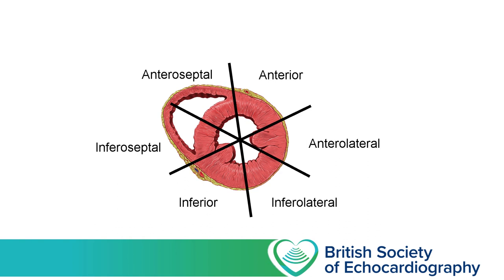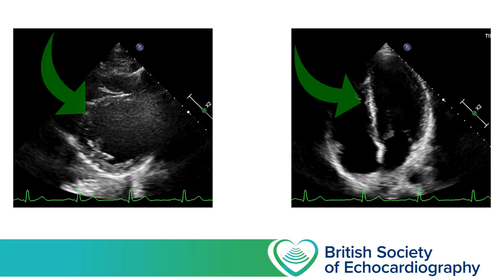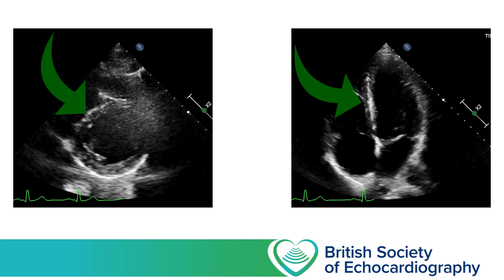At the base of the LV we use the same six divisions, while at the apex the septum and lateral walls are not divided, giving only four apical segments: septal, anterior, lateral, and inferior. It's possible for the same segments to be seen in multiple windows. Here you can see a parasternal short axis view and an apical four-chamber view from the same patient, with the arrow highlighting the mid-infero-septal wall in both cases.